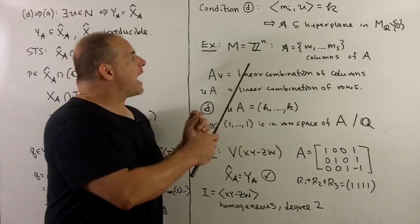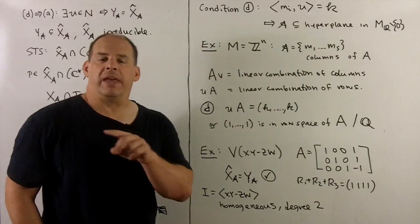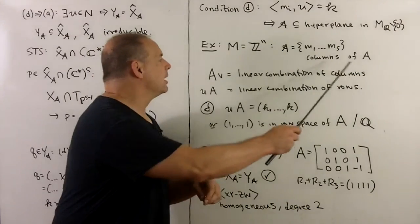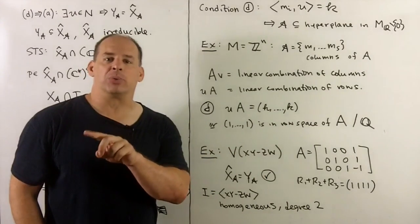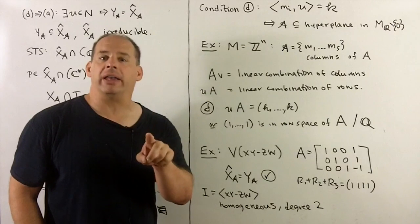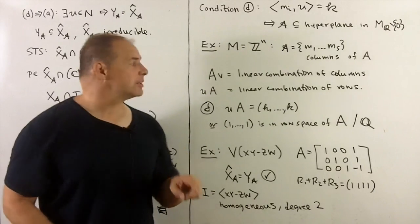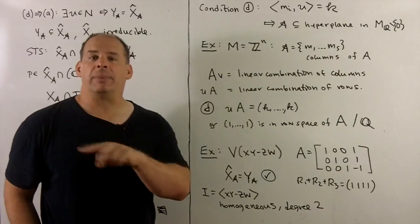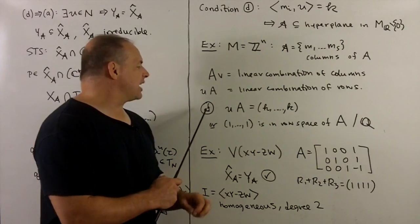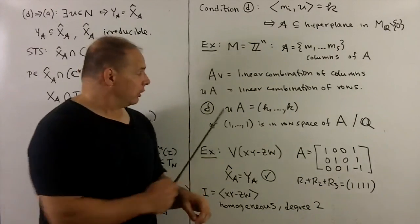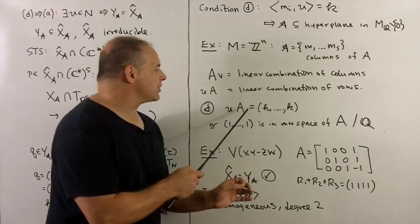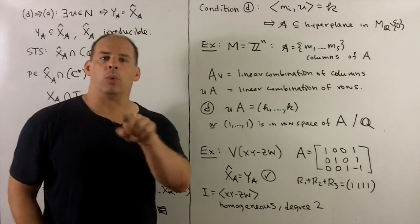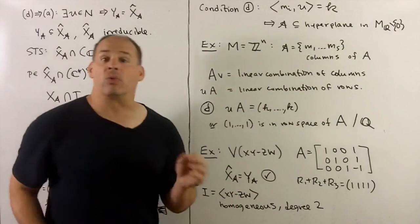A little bit better is using linear algebra. If I have character lattice equal to Z to the n, we could think of our m1 through ms as being columns of a matrix A. And then we note, what happens with linear algebra? If we take A times a vector on the right, we get a linear combination of the columns. If I take u times A, u a vector on the left, we get a linear combination of the rows. So condition D is the same as trying to solve uA equal to a tuple full of k's. And so this is the same as saying that the tuple (1,1,...,1) is in the row space of A over the rational numbers.